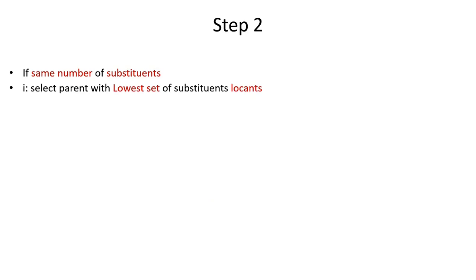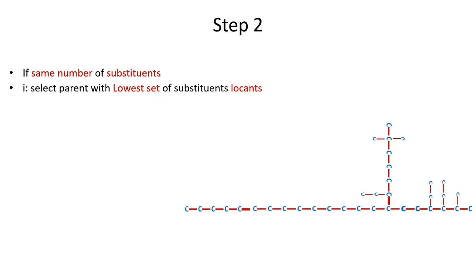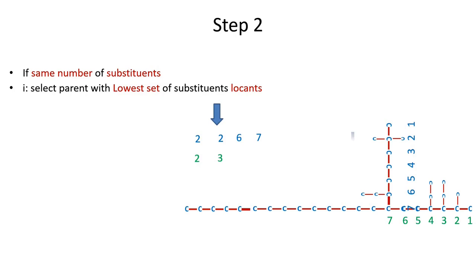If the number of substituents is also the same, select the parent with the lowest set of substituent locants by comparing them one by one. Number both chains so you can find the locants of the substituents. Write down the locants for substituents of the first chain — methyl at position 2, another methyl at the same position, ethyl at position 6, and a complex branch at position 7. For the second chain, the first substituent is at position 2, but the second substituent is at position 3. The chain with the lower locant at first point of difference will be our parent hydride.